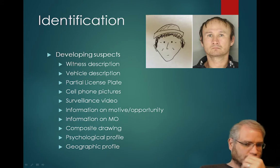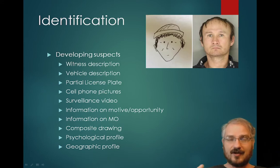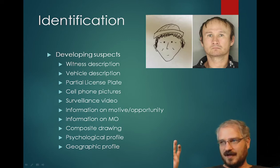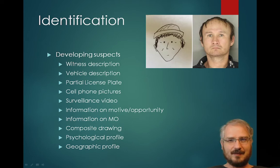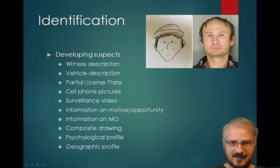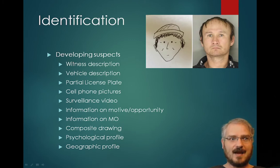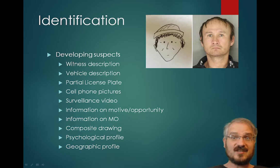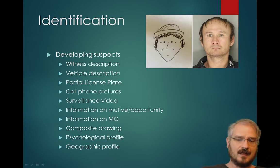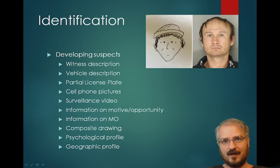Even a couple of letters combined with the state and the type of car can narrow it down significantly. If they say it was a white Prius with Tennessee plates beginning with XY, that might match only five or six cars in the state. Luckily we live in the 21st century where everyone has a camera in their pocket, so lots of people will have cell phones out and can capture pictures or full video that help identify who committed the crime.